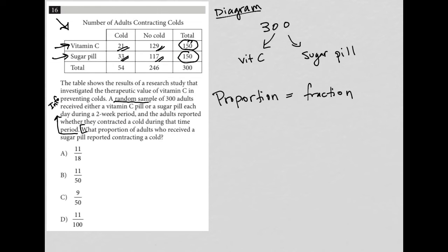All right, so I'm already going to just draw my fraction bar. What proportion of adults who received a sugar pill? So again, let me erase this stuff so we can clarify what we're looking at. So what proportion of adults who received a sugar pill, so we're looking at this row, the sugar pill row. What proportion of adults who received a sugar pill reported contracting a cold?